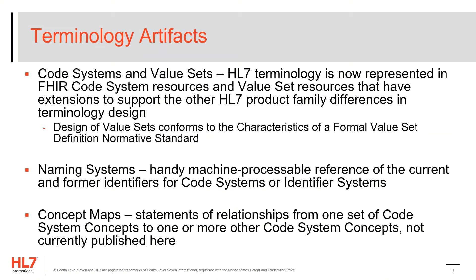The HL7 terminology is now represented as FHIR code system and value set resources. There are extensions in place to support the differences in design for the other HL7 product family artifacts. The design of value sets conforms to the characteristics of a formal value set definition normative standard. Naming systems are also provided as machine-processable references for current and former identifiers for code systems or identifier systems. While there is a tab for concept maps, they're currently not published here, as concept maps are statements of relationships from one set of code system concepts to one or more other code system concepts. It's likely that they'll be supported once concept maps are normative in FHIR.